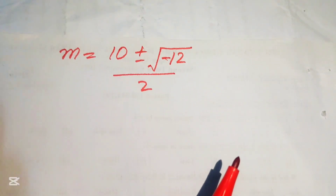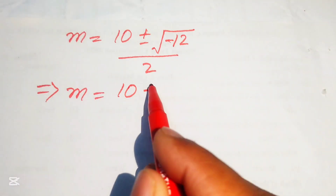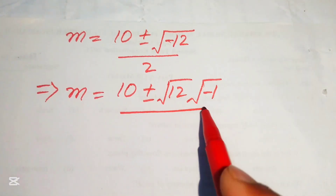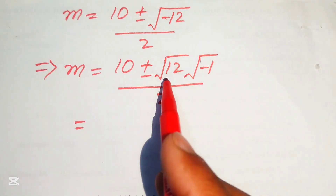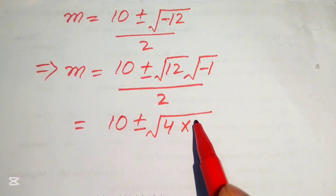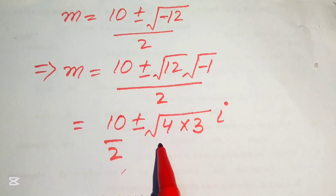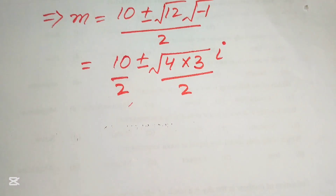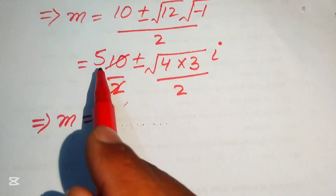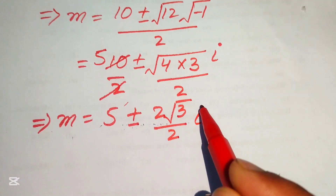We simplify the square root term: √(-12) = √12 · √(-1). Since √(-1) = i (iota), and √12 = √(4·3) = 2√3, we get √(-12) = 2√3 · i. Dividing each term of the numerator by 2: (10/2) ± (2√3·i / 2) = 5 ± √3·i.